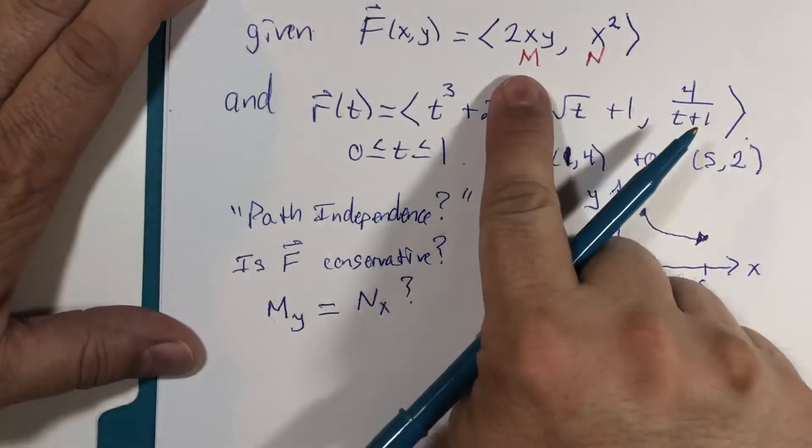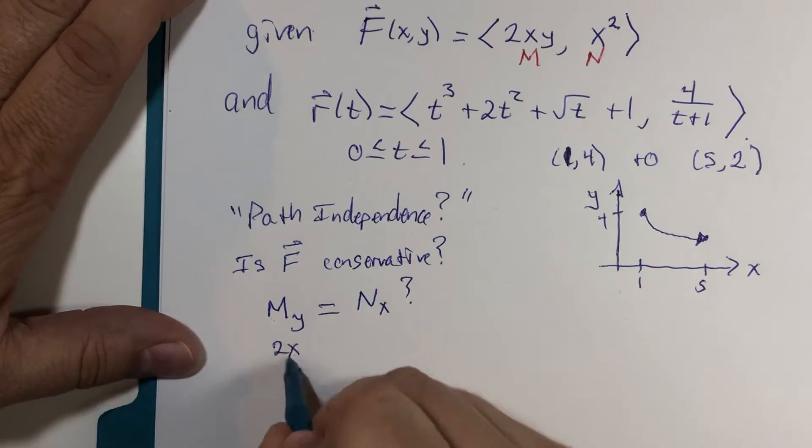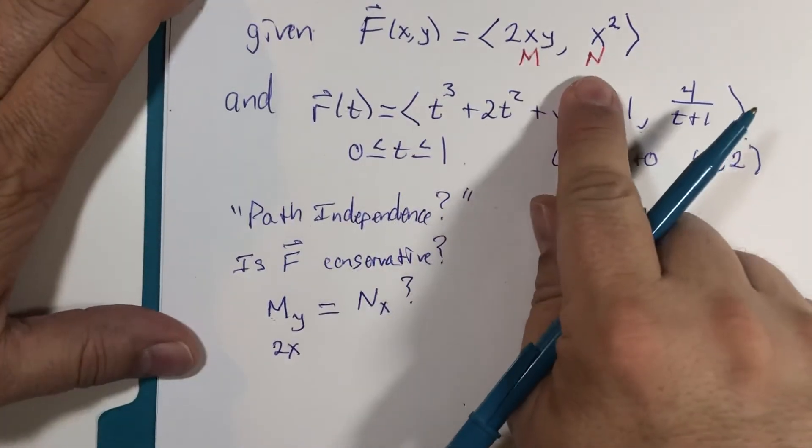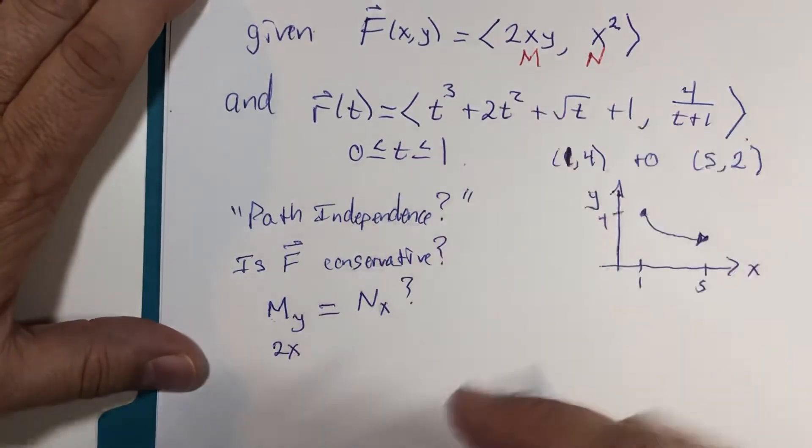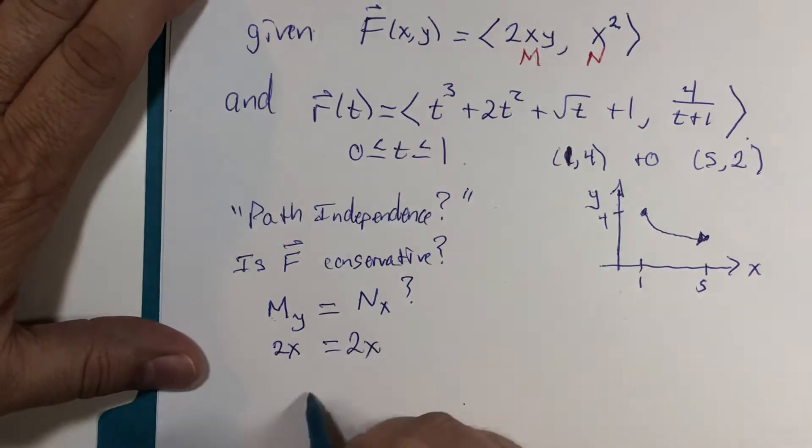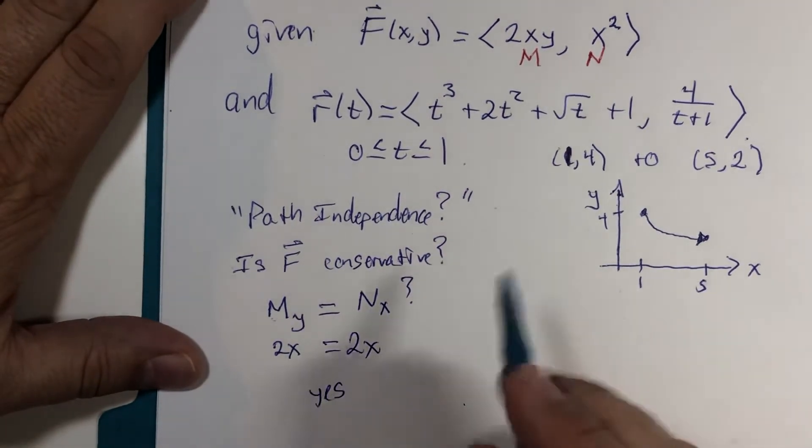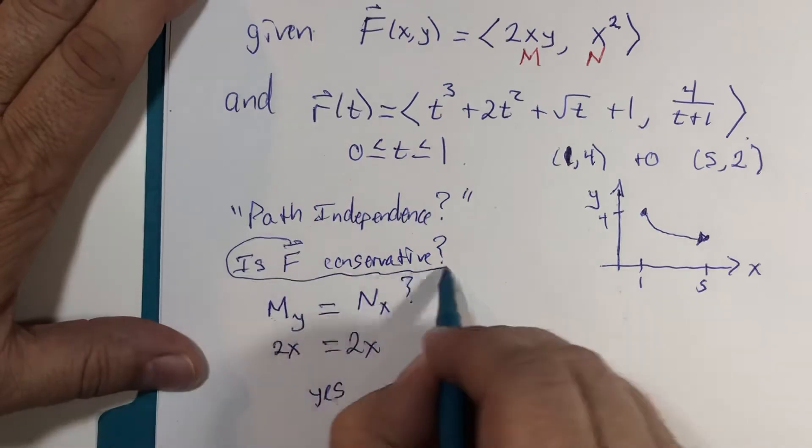Well, if y is the variable, the derivative of that will be 2x. And if x is the variable here, then the derivative of that would also be 2x. Yes. That's the answer to this question.